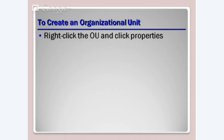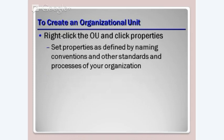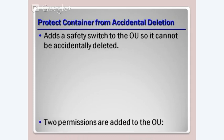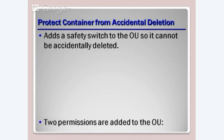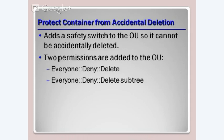You can right-click on the organizational unit you created and click Properties to set properties as defined by naming convention and other standards in your organization — no two organizations are the same. To protect it, this adds a safety switch so the OU can't be accidentally deleted. Two permissions are added: Everyone Deny Delete, and Everyone Deny Delete Subtree. Subtree means anything below — if I have an OU for North America with Canada and U.S. under it, and I try to delete North America, it's not going to let me unless protection is explicitly turned off.